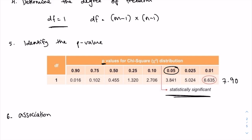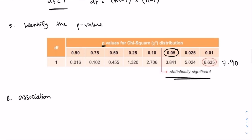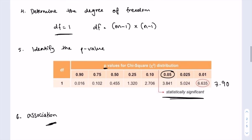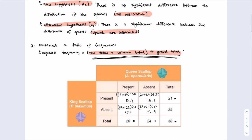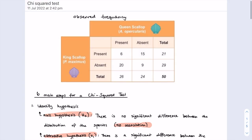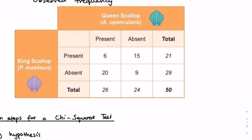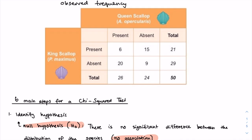This means the alternative hypothesis is accepted and the null hypothesis is rejected. The final step is to determine whether this association is positive or negative, which we can do simply by looking at the data. It is clear that the two species do not tend to be present in the same area, so we can infer that there is a negative association between them. Thank you for listening, I hope this video helped!